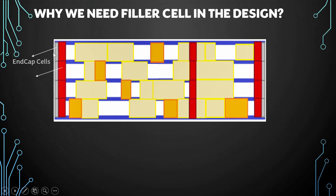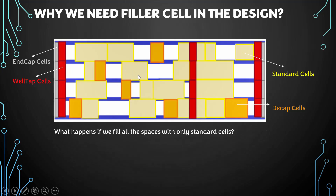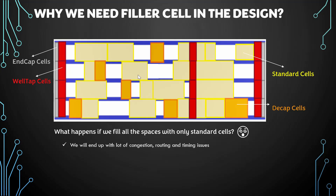The gray colored one is the end cap cell, the red colored ones are the well-tap cells placed at certain distances. These are the standard cells and there are some gaps. What happens if all the standard cells in the design are abutted? We will end up with a lot of congestion, routing, and timing issues. That's the reason why we have a utilization of around 60-70% in the design.